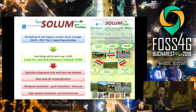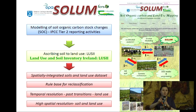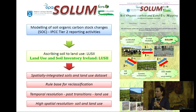In order to do the modeling, you actually need a really good database of soil and land use. This is the inventory that we are producing. But in order to achieve that, you actually need to spatially integrate land use and soil. You have to have a rule base for classification and reclassification at the detail and spatial resolution needed for national needs. Temporal resolution is also important — the past transitions between, for example, cropland and grassland, and high spatial and classification detail of land use.